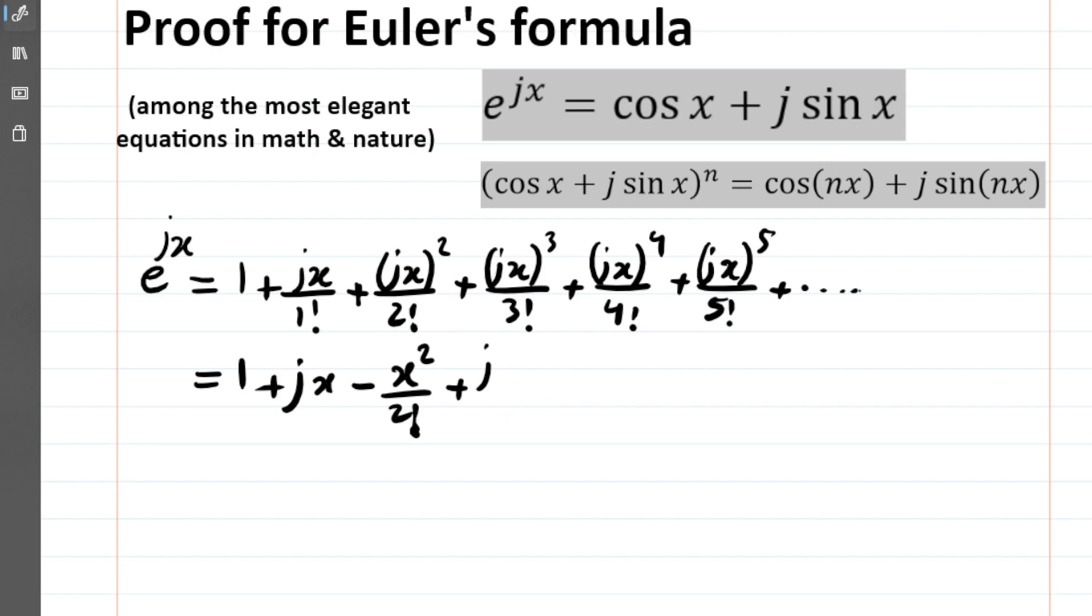So I'm going to write it as -jx^3/3!. And then we have j^4, which means j^2 times j^2, and these are -1 times -1, which equals +1.